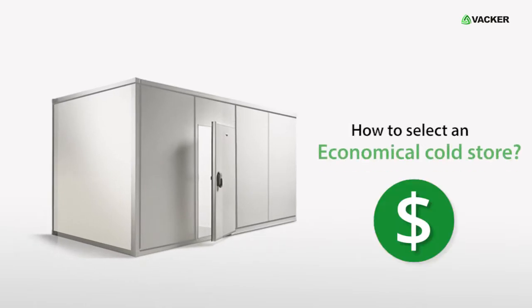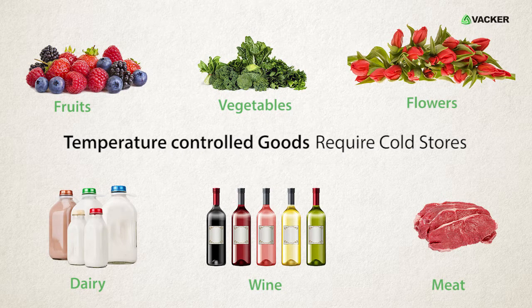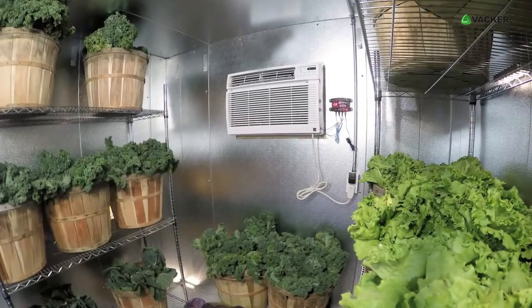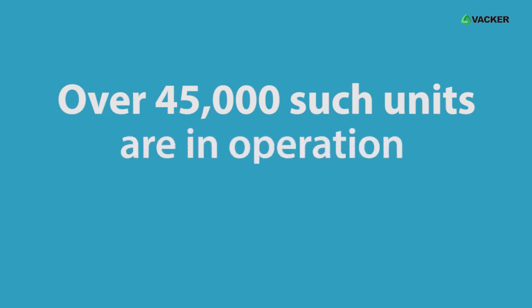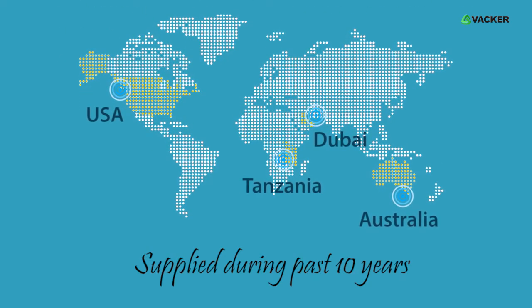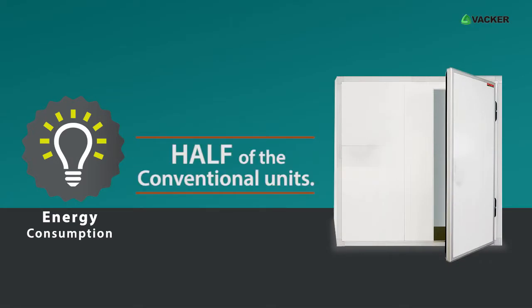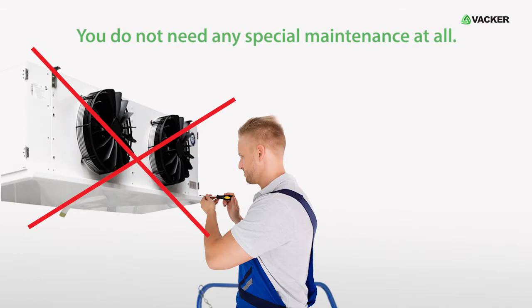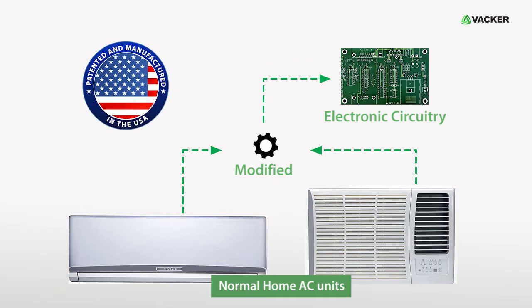How to select an economical cold store. All kinds of temperature-controlled goods require cold stores. Cold rooms which work on split AC or window AC units will be your most economical solution. Over 45,000 such units are in operation around the world during the past 10 years. These will be only half the cost of a regular cold room, and the energy consumption will be only half of conventional units. Most importantly, you do not need any special maintenance at all. Normal home AC units are modified using an electronic circuitry patented and manufactured in the USA.